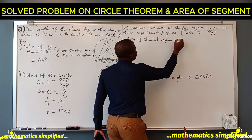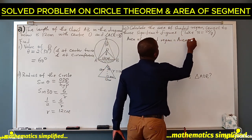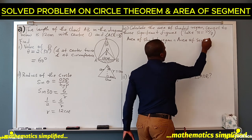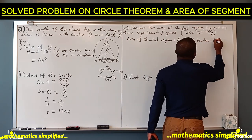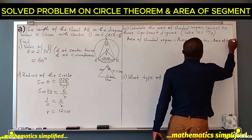So area of shaded region is area of sector minus area of triangle.